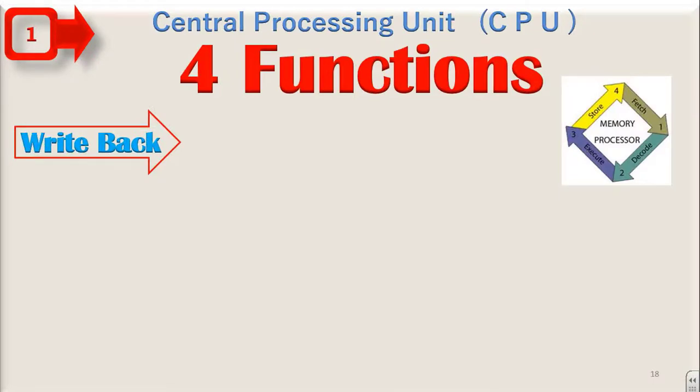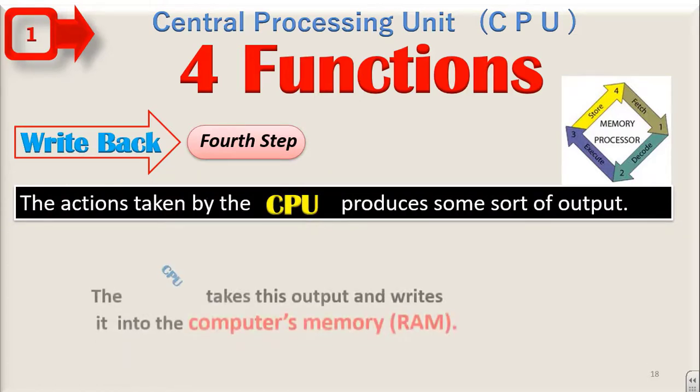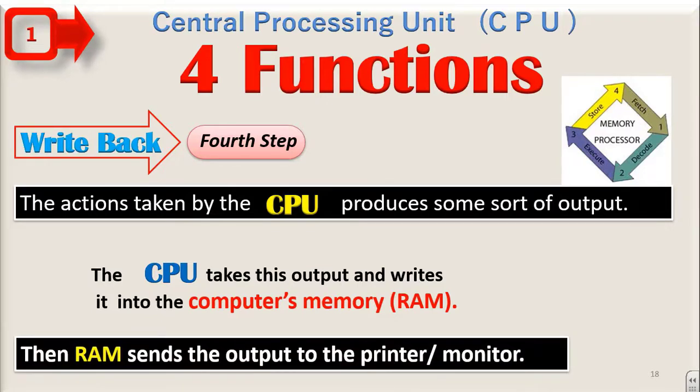Write-back. Fourth step is write-back. The actions taken by CPU produce some sort of output. The CPU takes this output and writes it into the computer's memory, i.e. RAM. Then RAM sends the output to the printer or monitor.